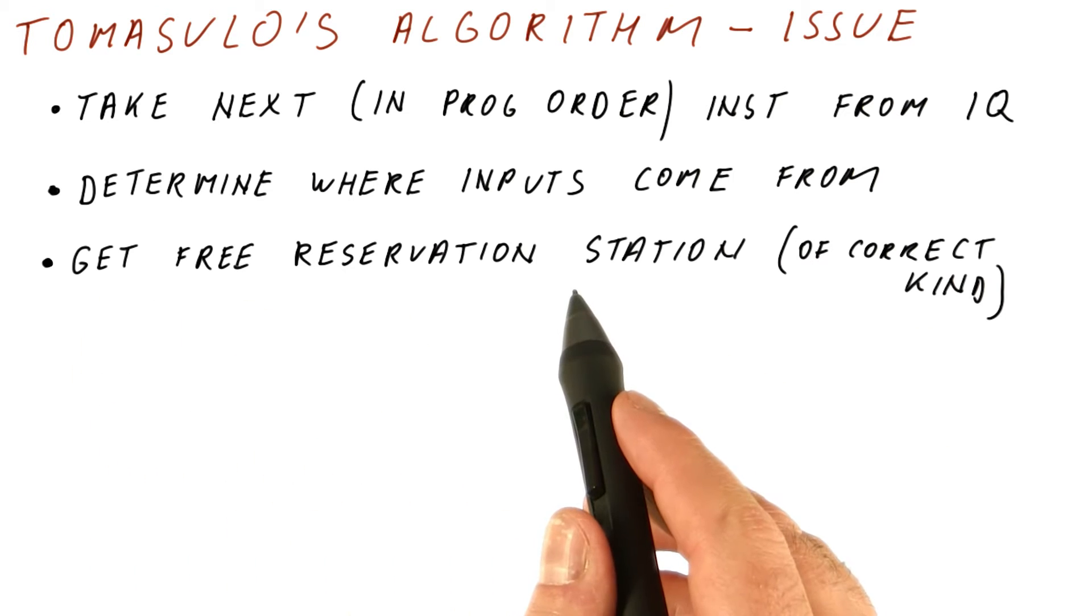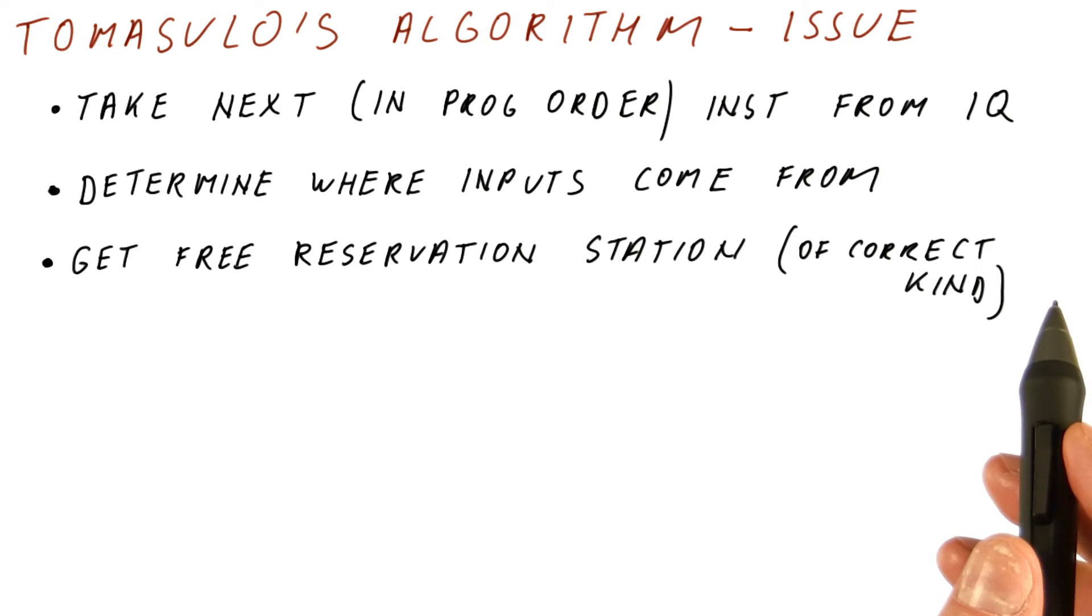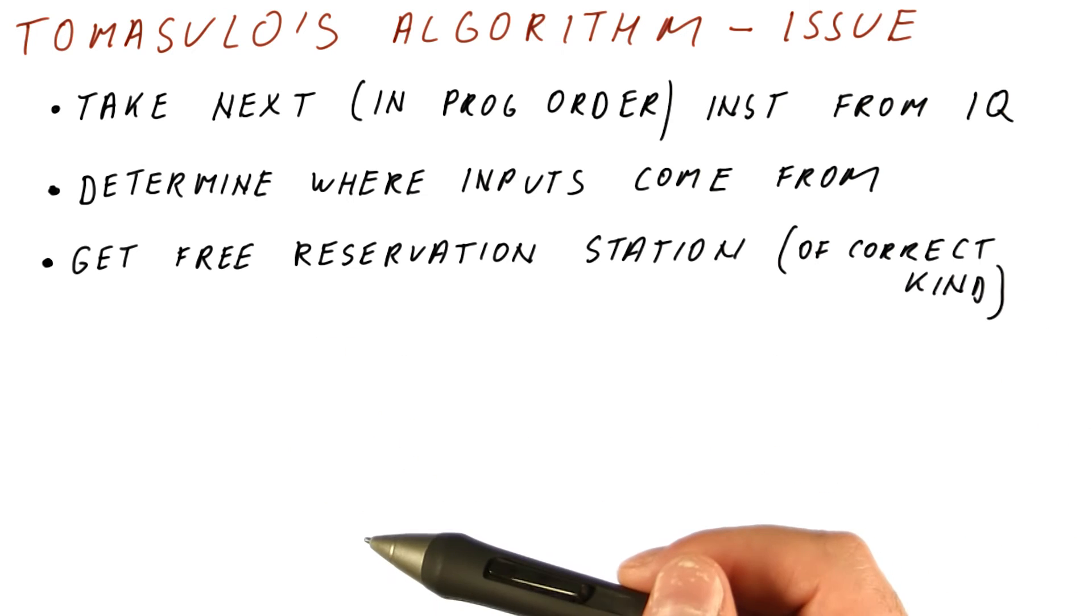We're then going to get a free or available reservation station of the correct kind. Note that there are some reservation stations that are for the adder, some of them are for the multiplier. So if this is an add instruction, then we really need to find an available reservation station in front of the adder.